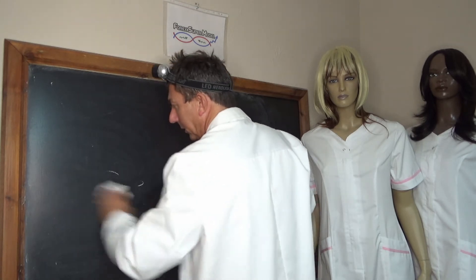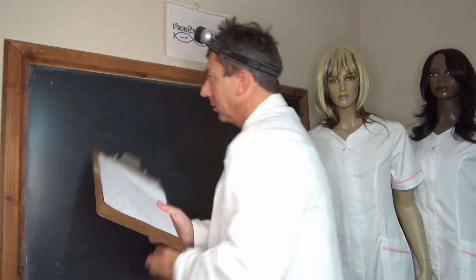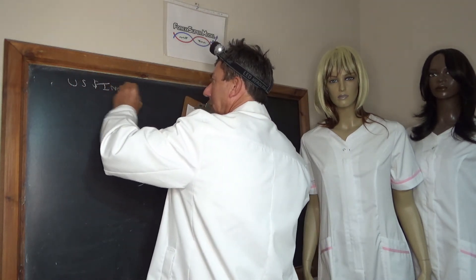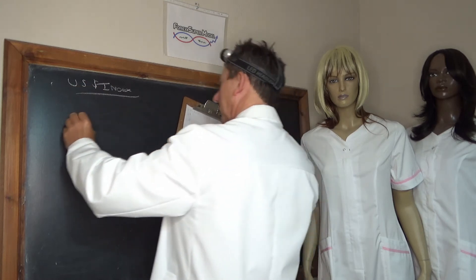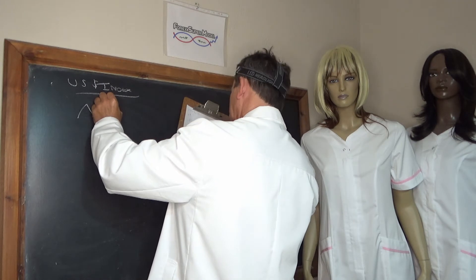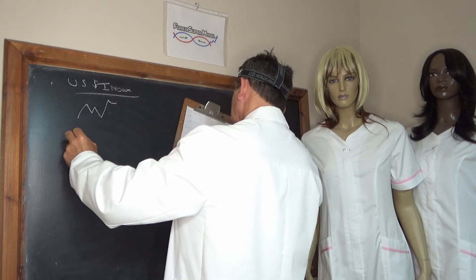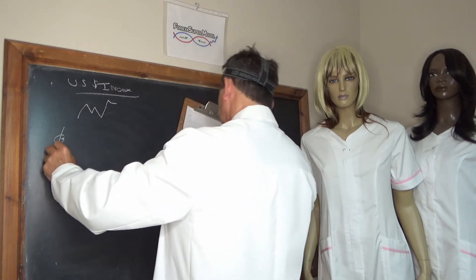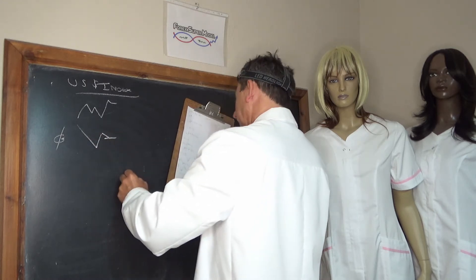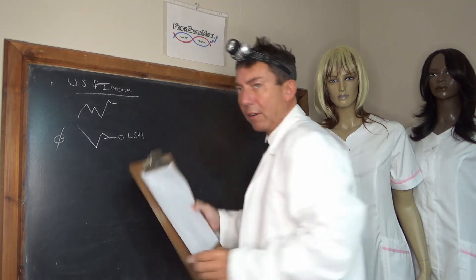So US dollar index, it's basically sort of just come off its highs really. But the dollar's very high in terms of the dollar index. Gold has come off a bit off the back of that. It's 0.45 from the high. It's still above half marks, so gold's hanging in there.